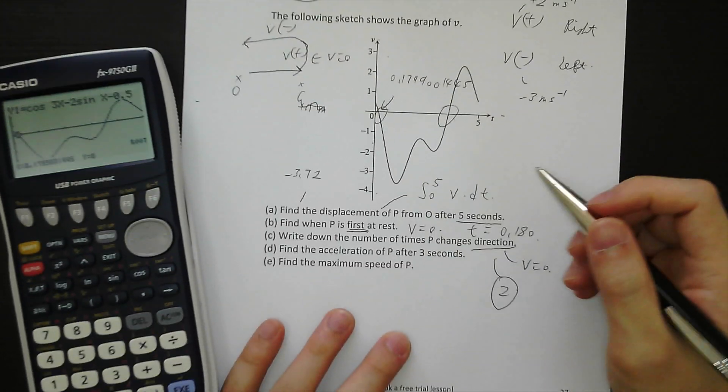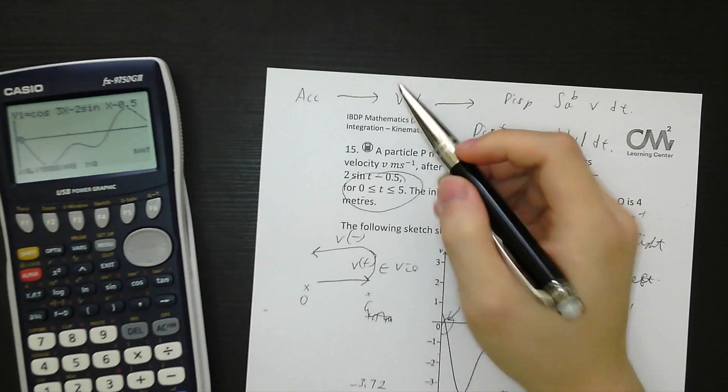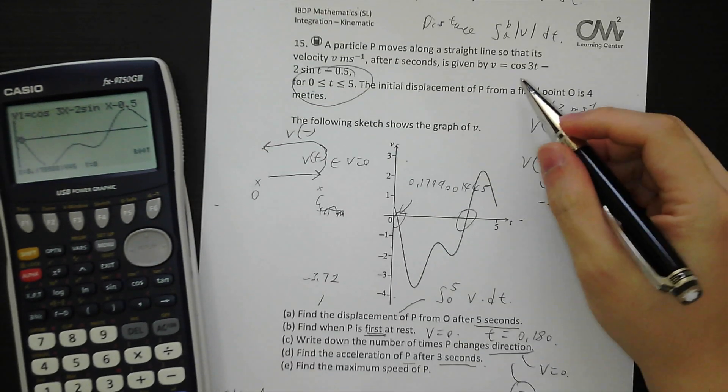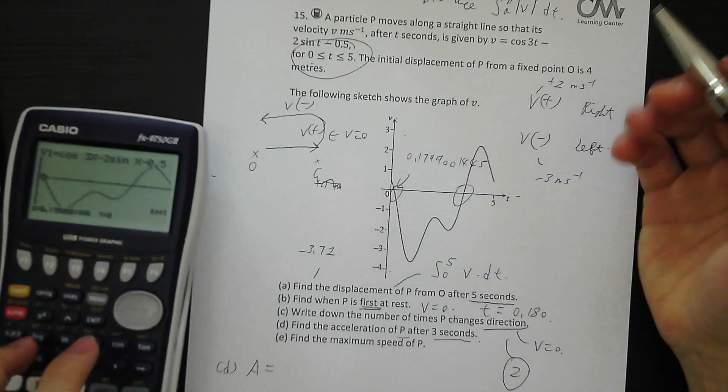Part D, find the acceleration of P after 3 seconds. So the integration of velocity will be acceleration. So let's find the acceleration functions. Differentiate cos 3t. But we can use the calculator.